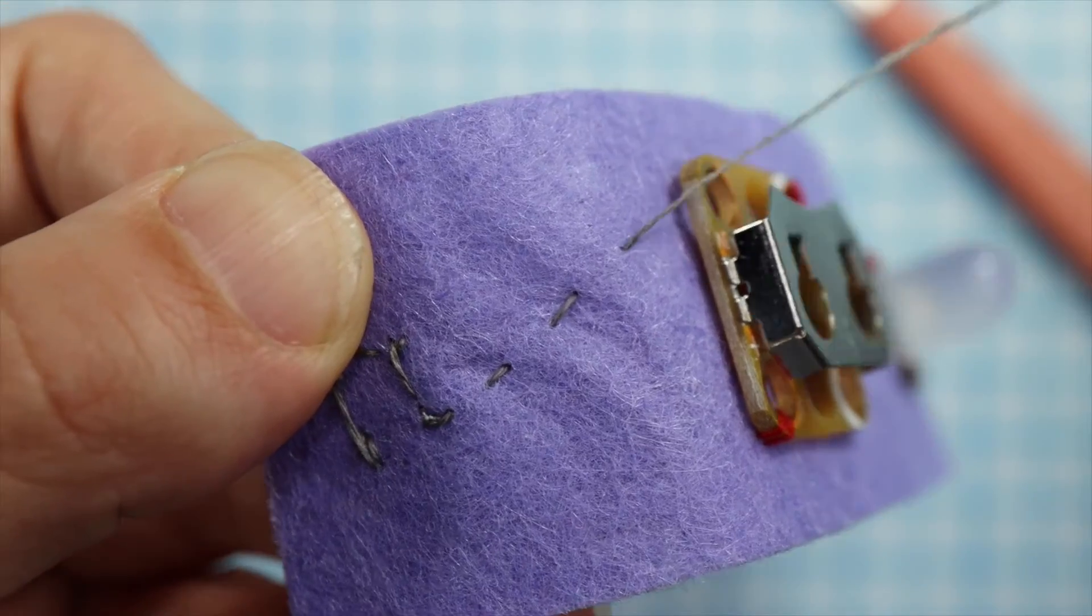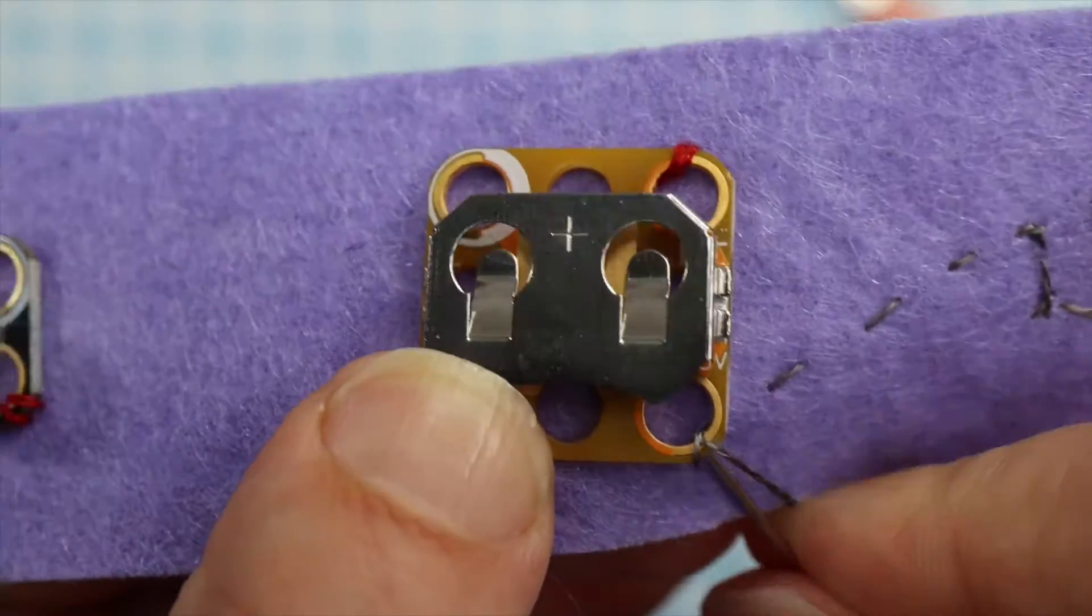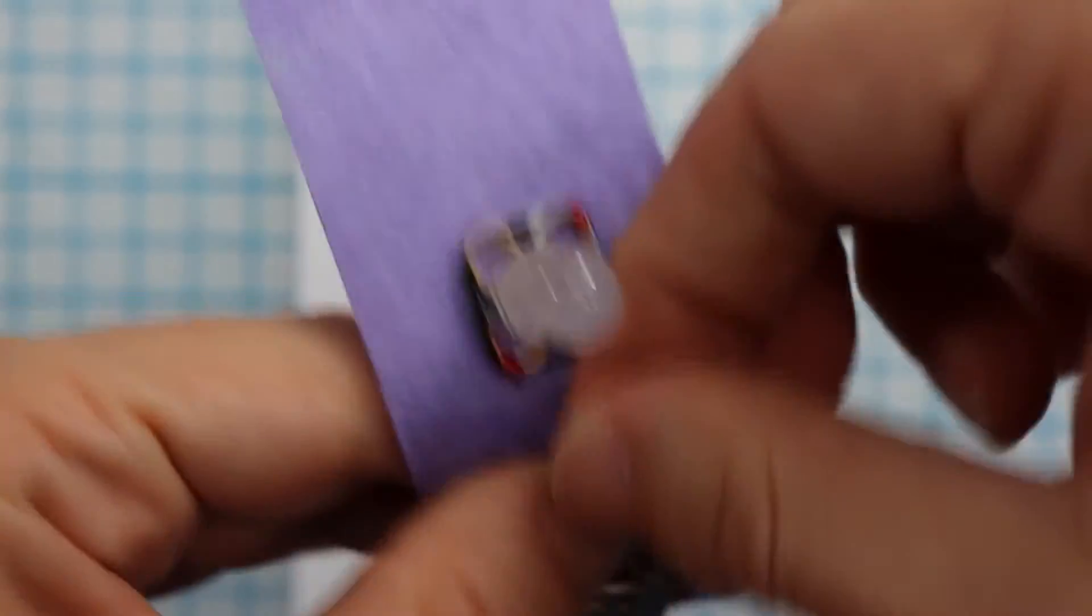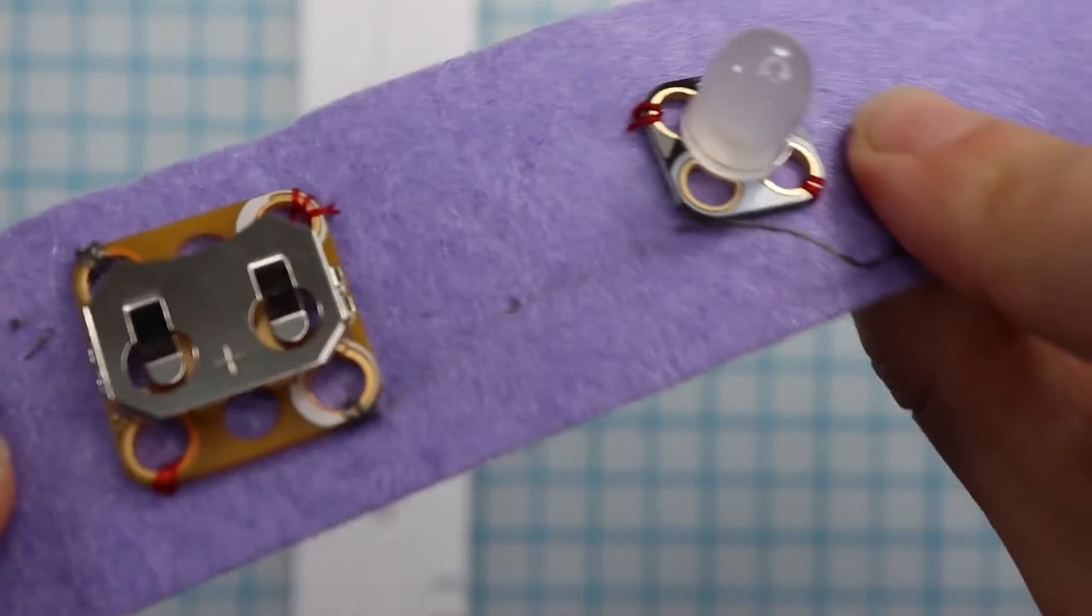To connect to the components, tie two knots around the hole in the Crazy Circuits chip. If using felt, you could choose to only go through half of the felt so that you can't see the stitching on the outside too.